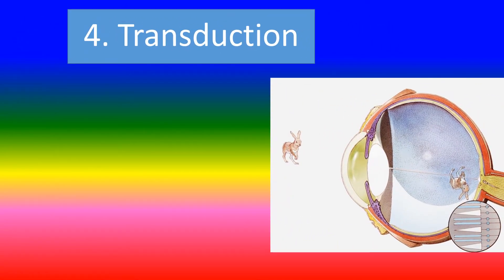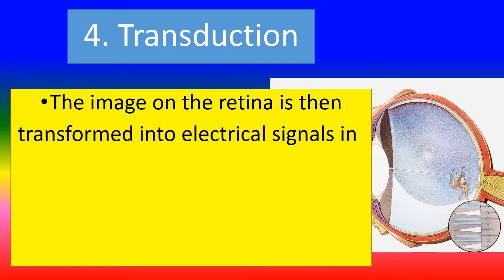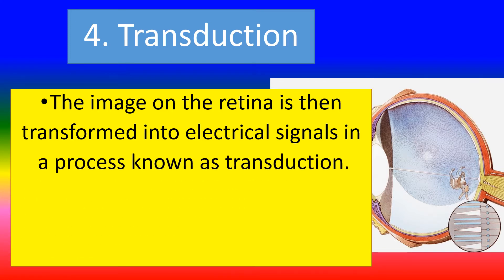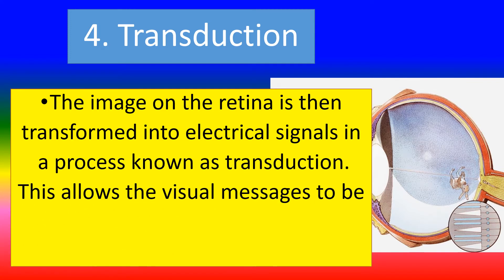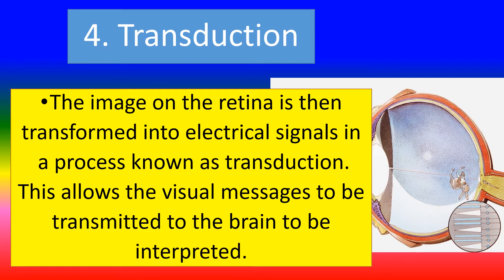Fourth step in the process: transduction. The image on the retina is transformed into electrical signals in a process known as transduction. This allows the visual images to be transmitted to the brain to be interpreted.